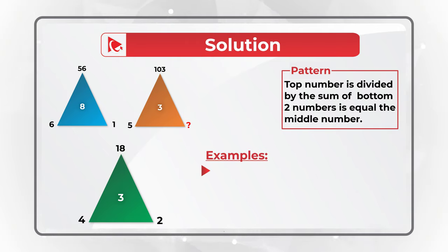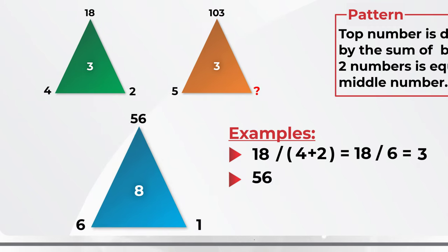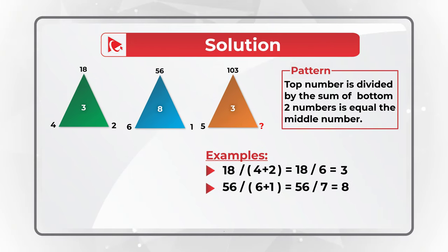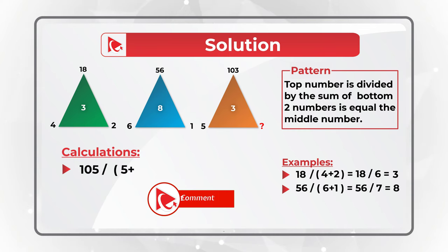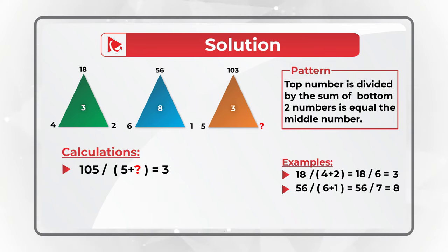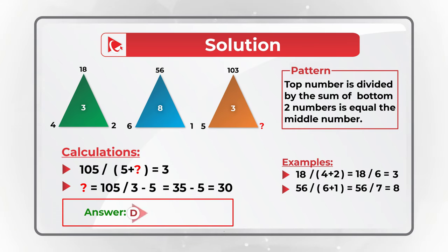Let's look at the first two examples. 18 divided by (4 plus 2) equals 18 divided by 6, equals 3. In the second triangle, 56 divided by (6 plus 1) equals 56 divided by 7, equals 8. So to calculate the missing number, we need to build an equation: 105 divided by (5 plus missing number) equals 3. To calculate the missing number, we divide 105 by 3 and subtract 5. 35 minus 5 equals 30. So the answer is choice D, 30.